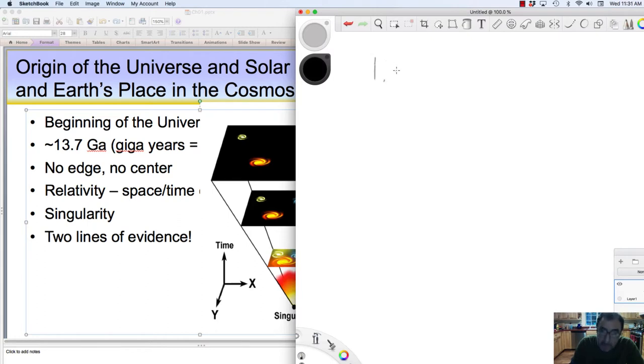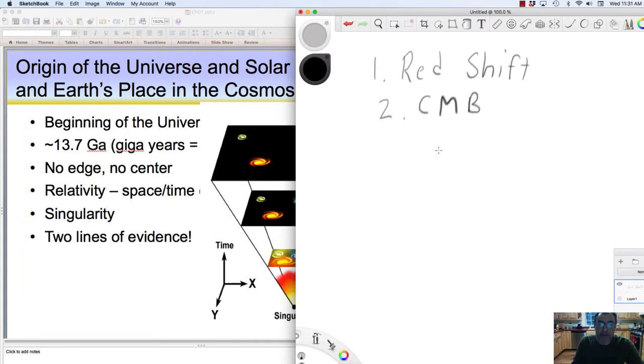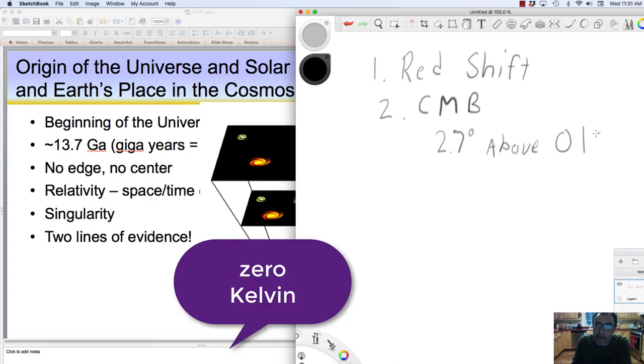And two is the cosmic microwave background radiation. So it's this pervasive radiation that occurs at about 2.7 degrees above absolute zero. And absolute zero is zero kelvin, which is negative 273 degrees centigrade.